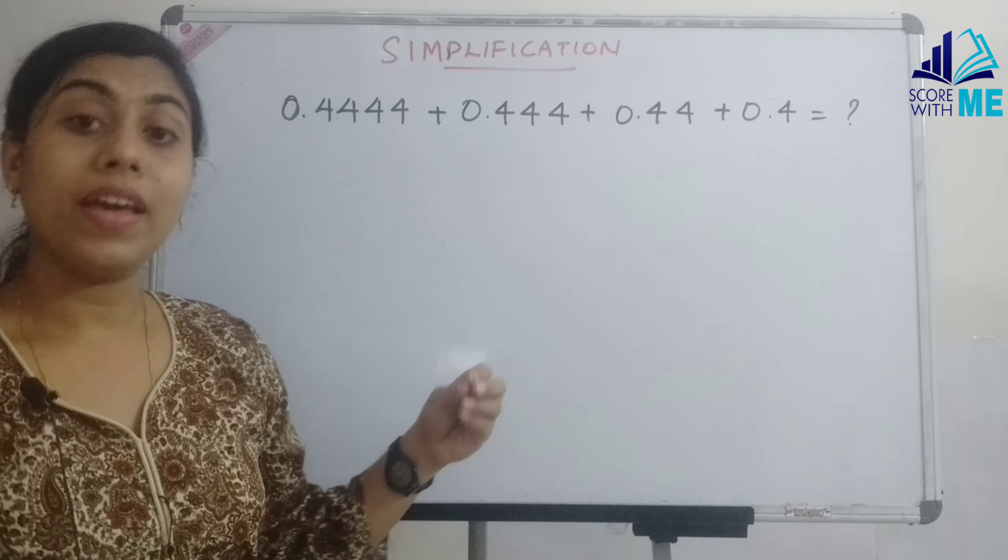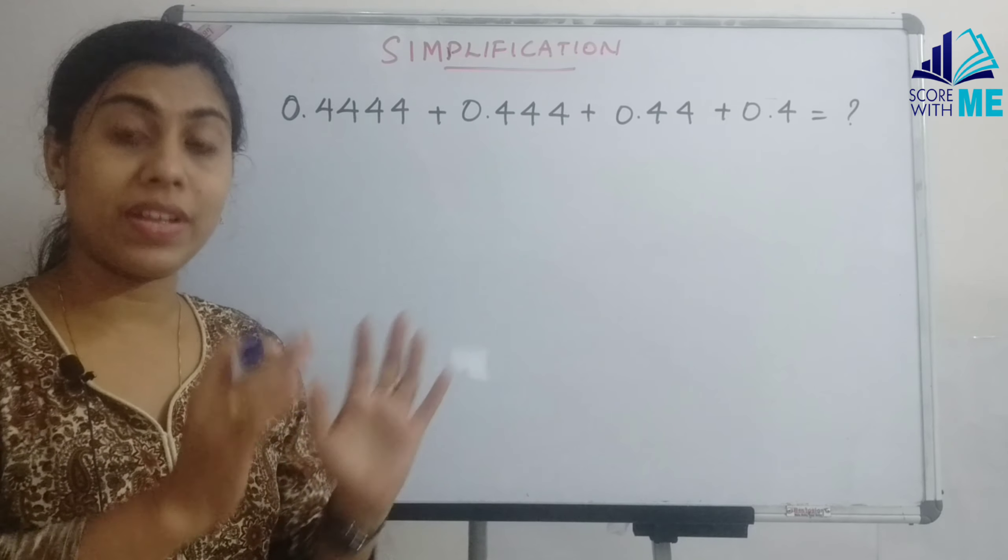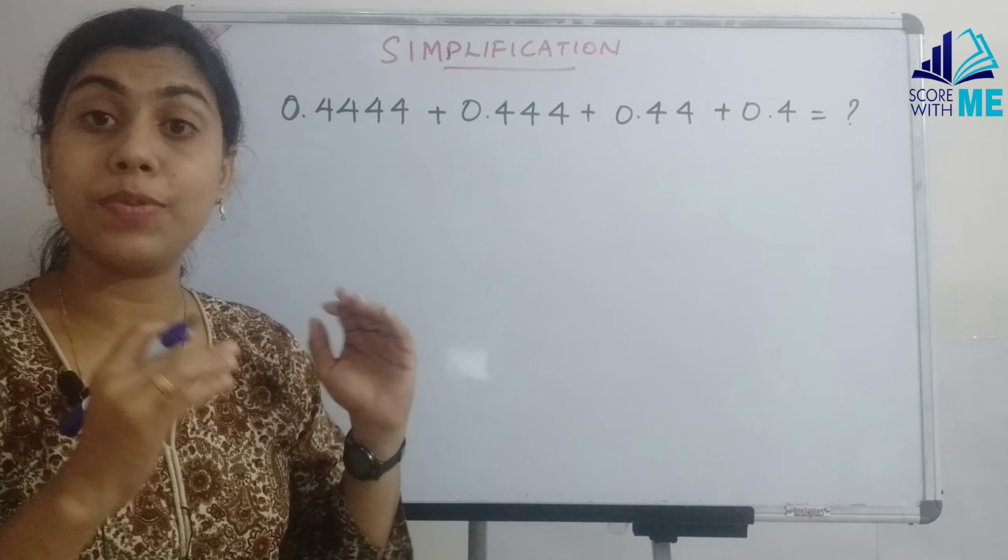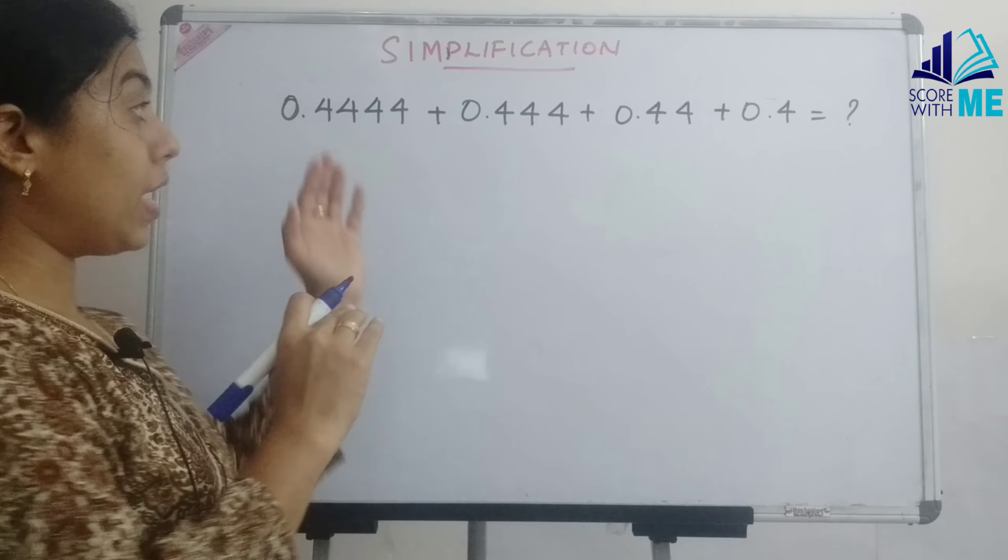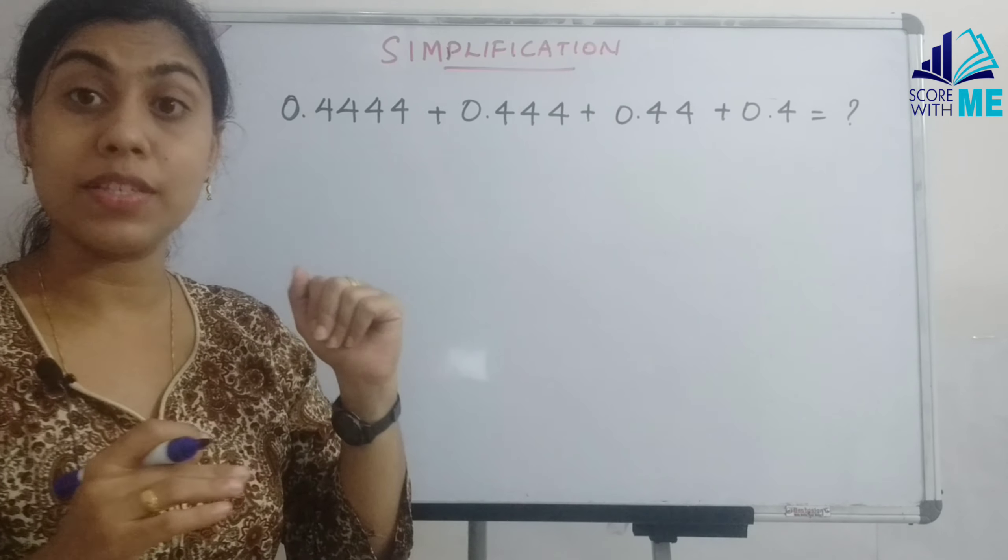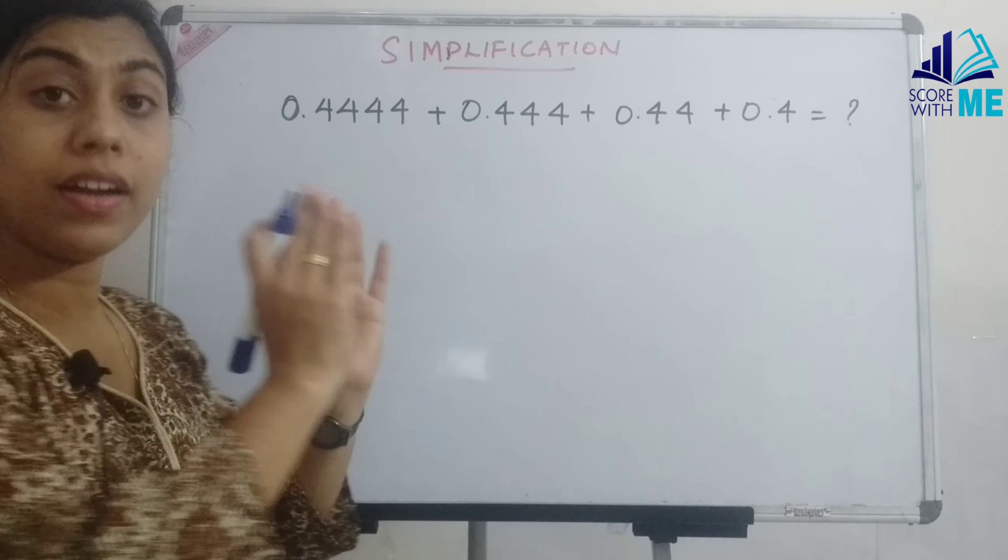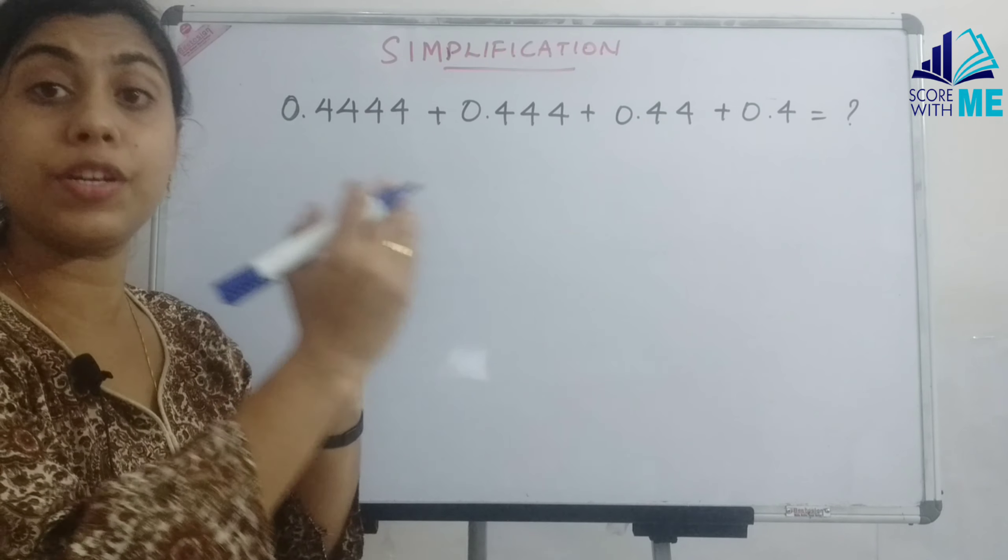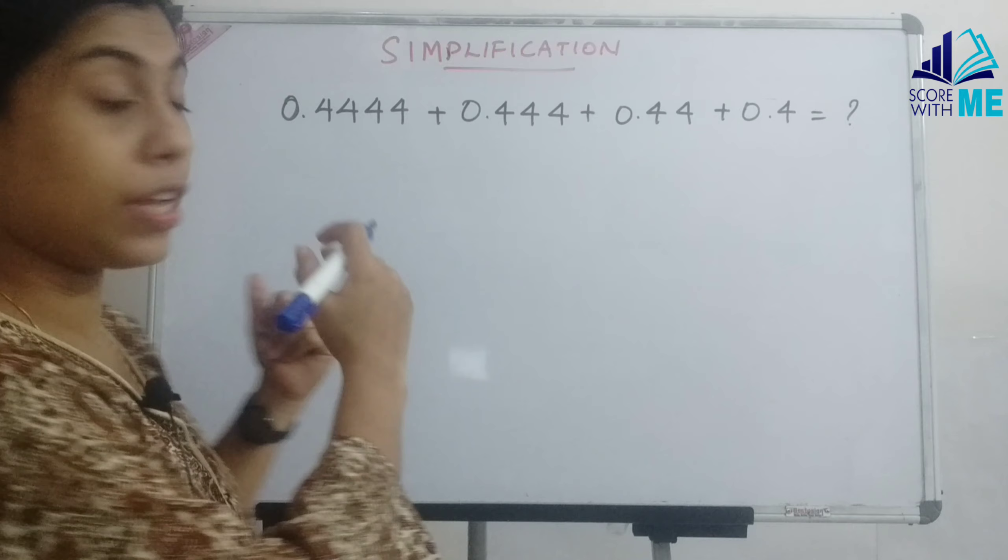Now here a small deviation from the previous question. There are numbers which are whole numbers. Here we have taken if the numbers are decimals. So what is the difference? Same method. There is no difference.